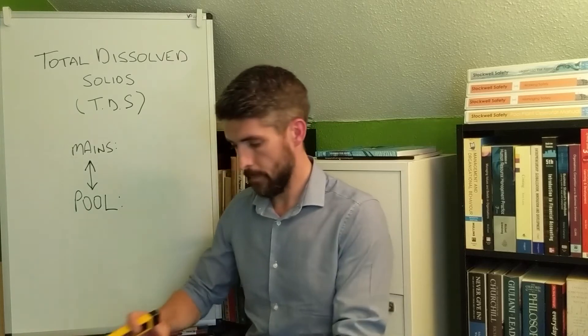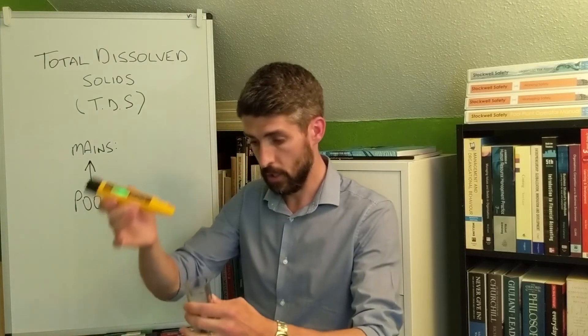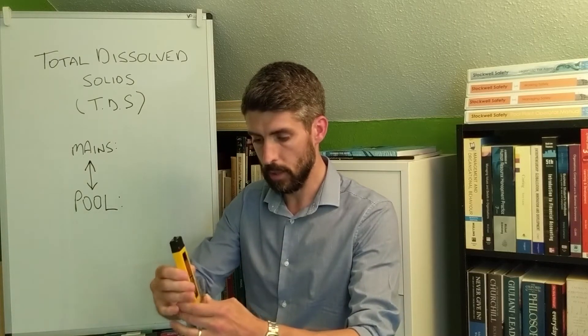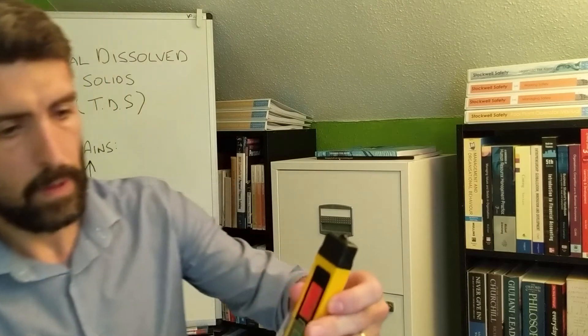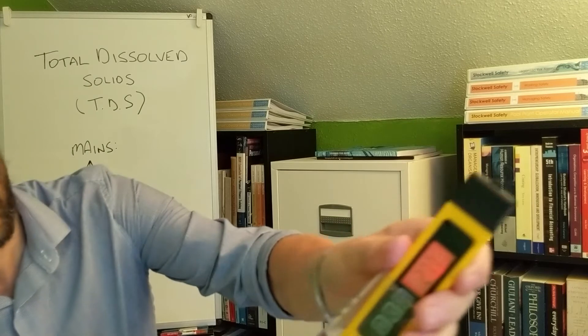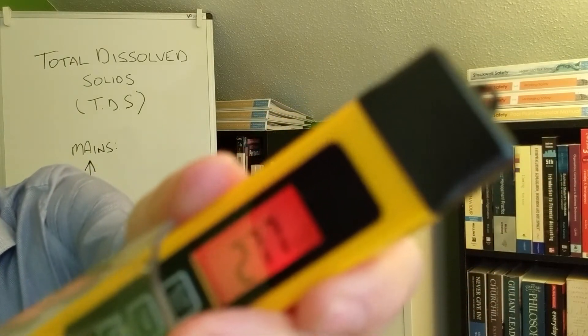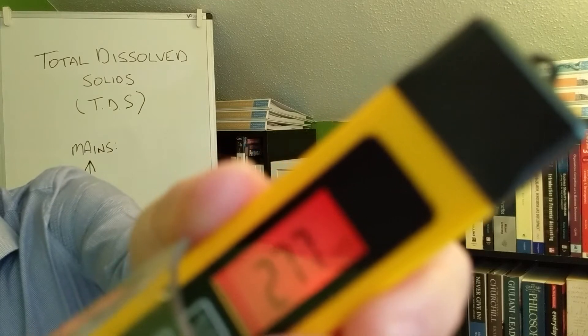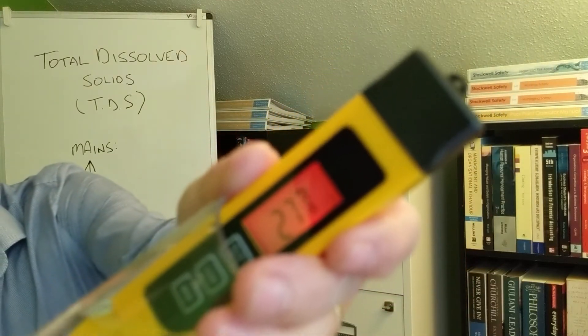So it's a case of turning it on and all you need to do is dip it into a sample, and the result will be shown in parts per million. So I'm getting 277, I think it's saying, so I'm hoping that will focus properly to allow you to see that it's 277 parts per million.